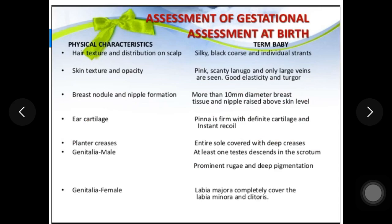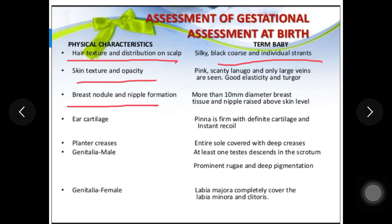For gestational age assessment at birth of a term baby: hair texture on scalp should be silky, black, coarse, with individual strands. Skin should be pink, with scanty lanugo hair, only large veins visible, and good elasticity and turgor. Breast nodules and nipple formation should be more than 10 mm diameter, with nipples raised above skin level.